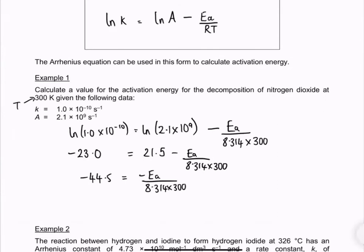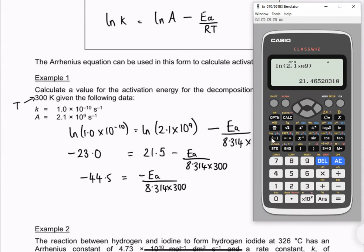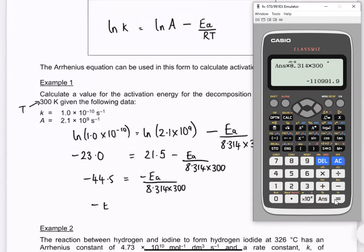So now I'm going to multiply both sides by 8.314 and 300. So I'll bring my calculator back in. Remember that I have taken minus 23.0 and I've taken away 21.5 and that's how I got minus 44.5. Now I'm going to times it by 8.314 and times it by 300. So I'm going to times both sides by the bottom line and I'm going to get minus Ea equals minus 110991.9.